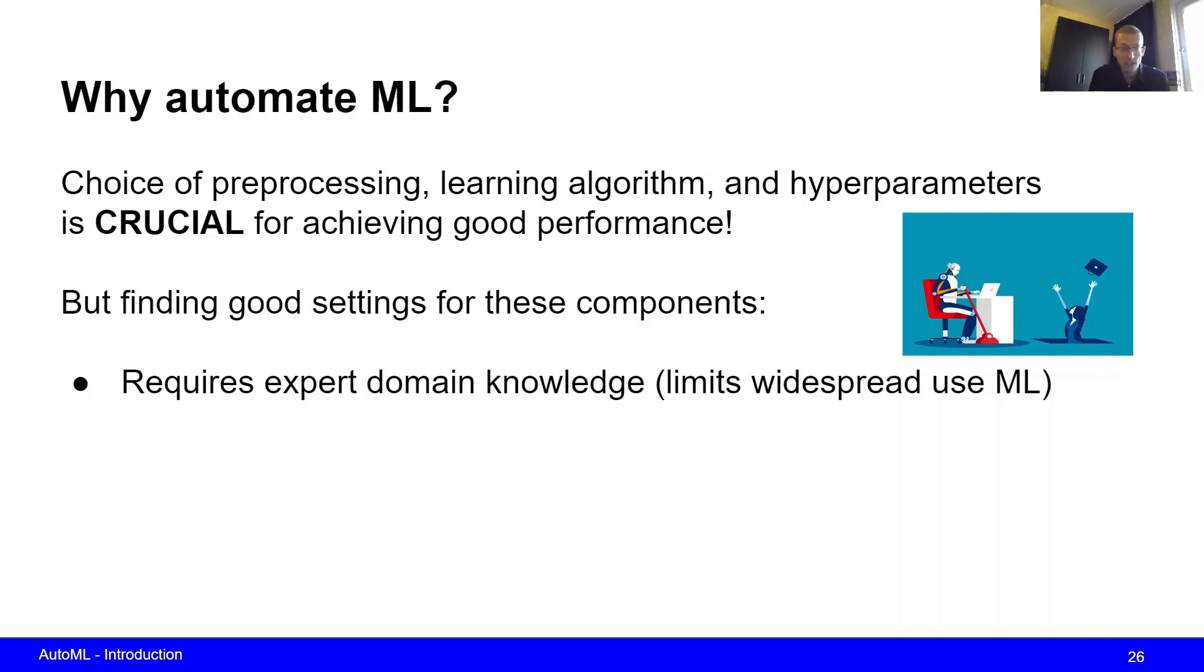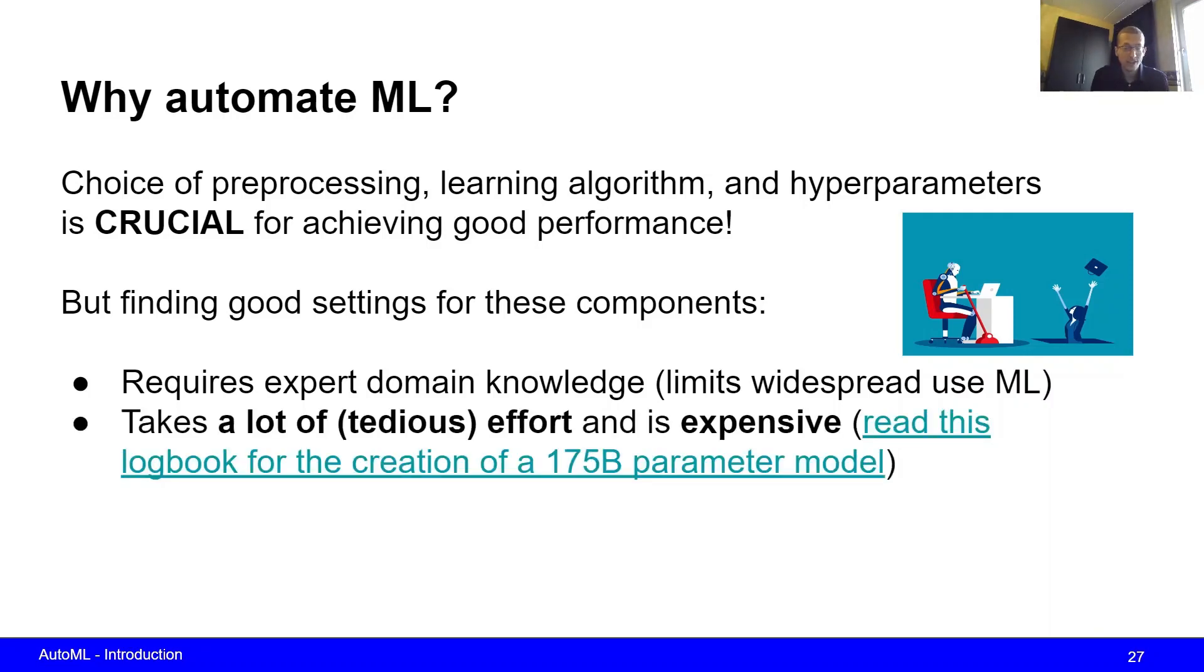What this means is that machine learning is not widely accessible to people who do not have this knowledge, who do not really understand the effect of these different components on the performance of your model, and this can be very hard. This point really limits the widespread use of machine learning. Secondly, it just takes a lot of effort to actually find correct settings for all of these components in order to be satisfied with the performance. In addition, it's also expensive because it often takes a lot of compute time, a lot of human time which is expensive. You have to pay for the salaries of the data scientists which are not too low.